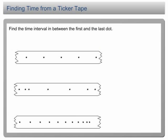Finding time from a ticker tape. Let's look at these examples. There are three strips of ticker tape on the slide. What are the intervals between the first and the last dot?